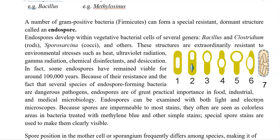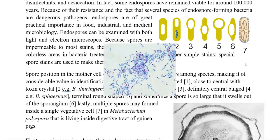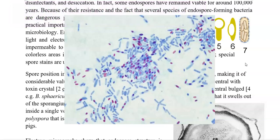Endospores formed by bacterial cells can be examined both under light as well as electron microscopes. Since spores are impermeable to most stains, they are often seen as colorless areas within the vegetative cells of bacteria that have been treated with methylene blue and other simple stains. Some special spore stains are commonly used to stain the spore portion, making them highly visible.